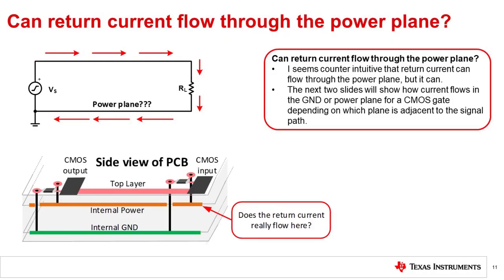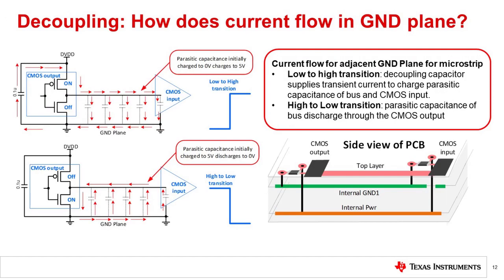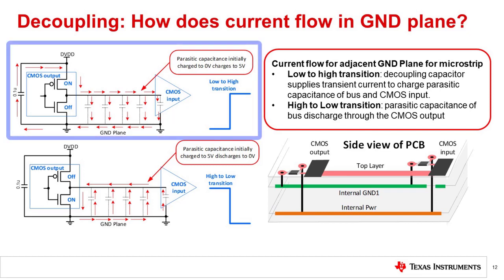One of the assertions made throughout this presentation is that return current will flow in the plane adjacent to the signal trace, regardless if this plane is a power plane or a ground plane. Let's look at how return current flows in a signal trace that's directly adjacent to the ground plane. The signal has a distributed parasitic capacitance with the ground plane. When the gate transitions its logic state, the parasitic capacitances will need to be charged or discharged. For a low to high transition, the top transistor turns on, the parasitic capacitors charge to DVDD, and current is drawn from the decoupling capacitor. For both transitions, the return current flows through the ground plane for this configuration.